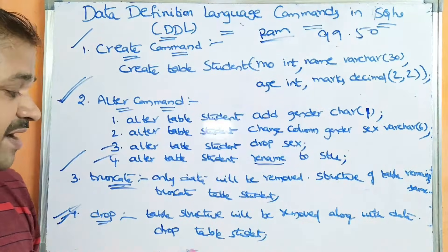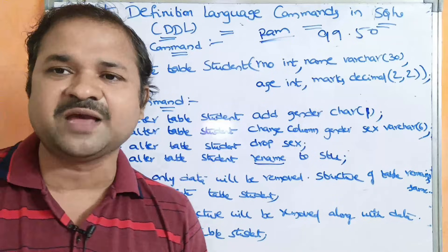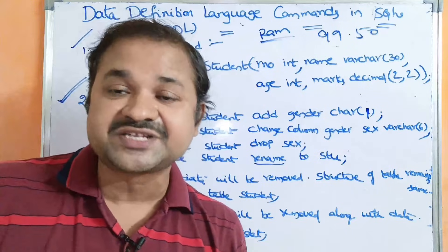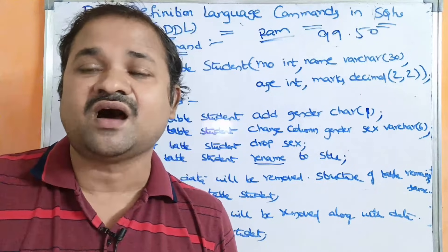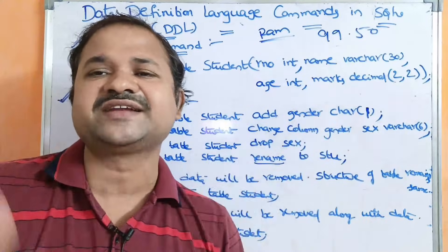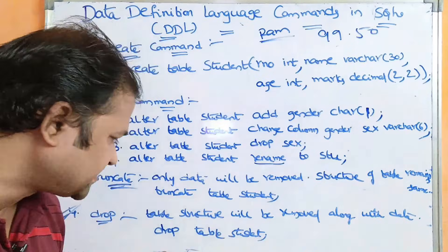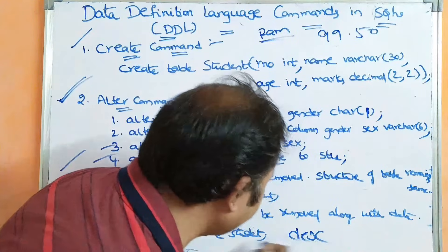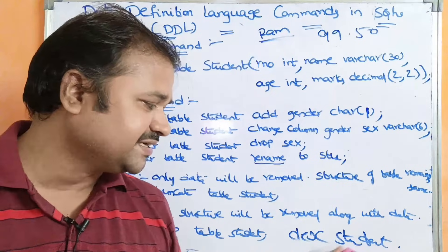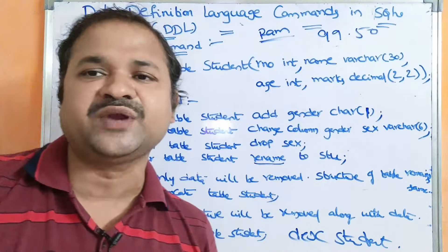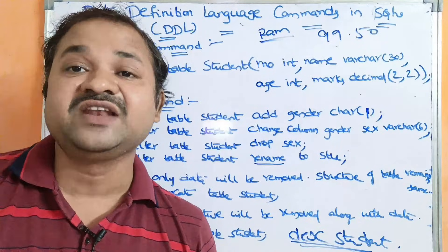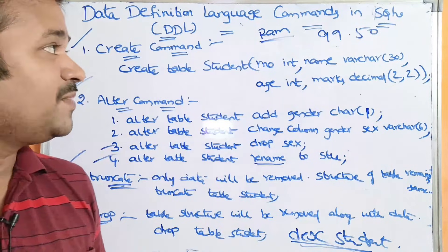The last command is DROP. Whenever we use DROP, then along with the data, the structure will also get removed. If the table contains 6 rows, all 6 rows will be deleted, and the columns and attributes will also get deleted. If we then try DESC student, it will normally display a description about the student table, but after executing the DROP command, if we use DESC student, nothing will be displayed. This covers DDL commands in SQL.